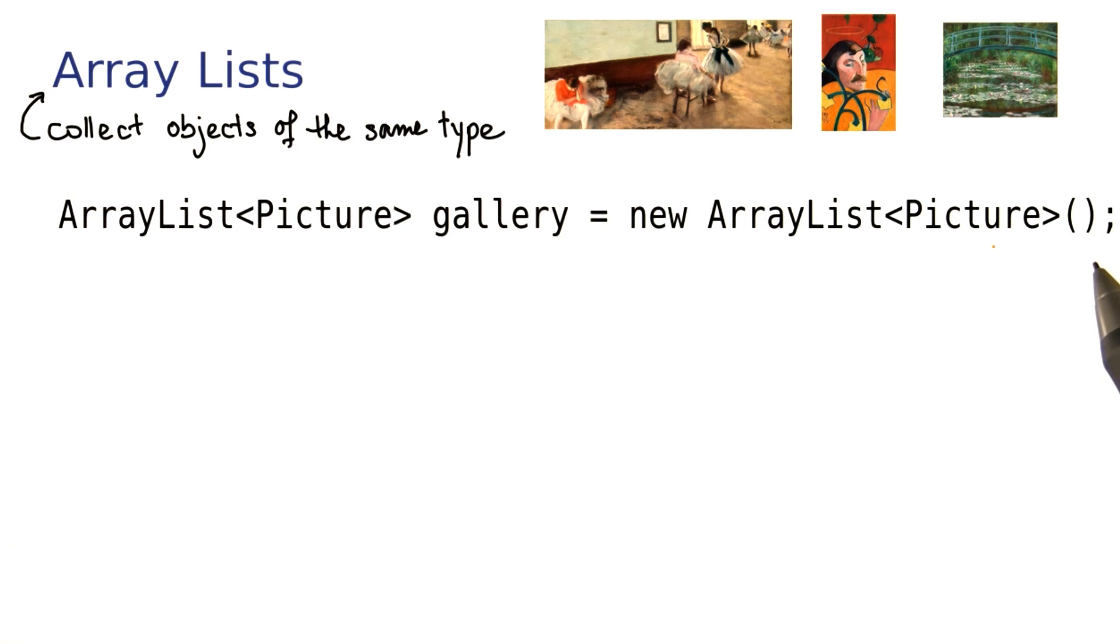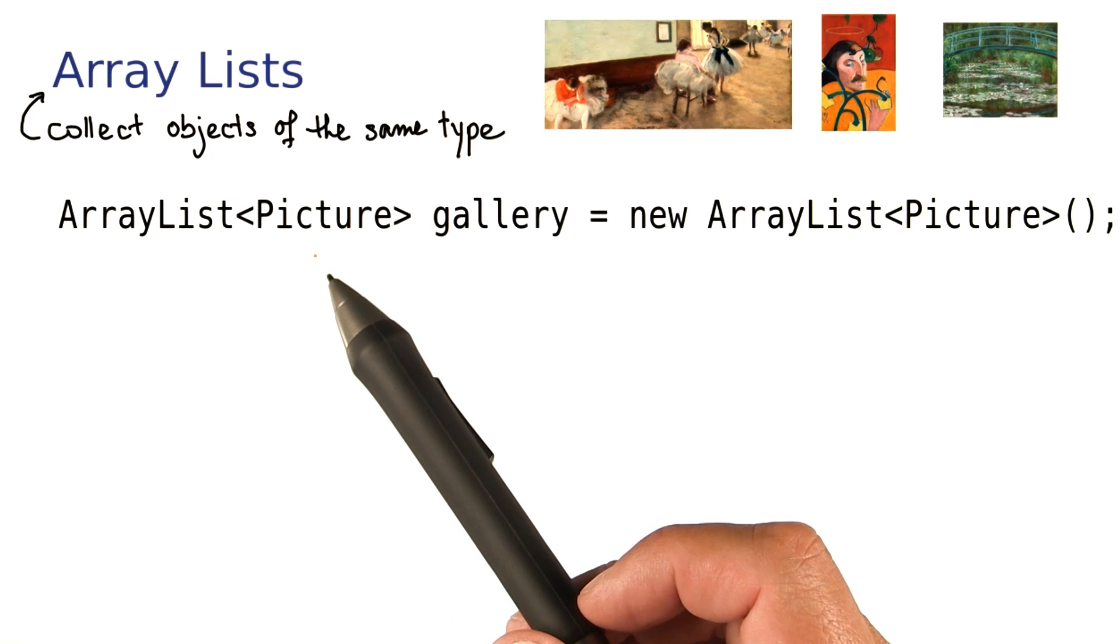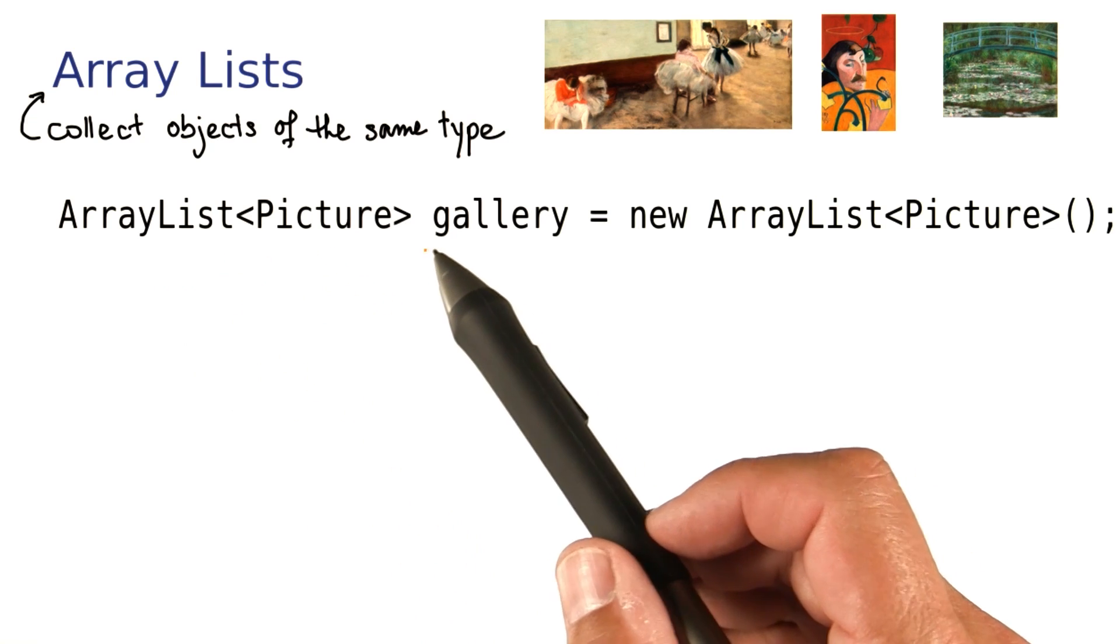Here you see the rather long declaration of an ArrayList that can collect pictures. Let's work through the pieces. We're declaring a variable called gallery.